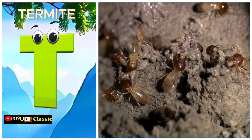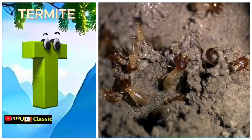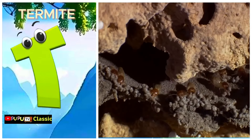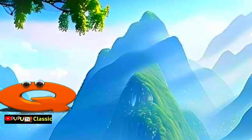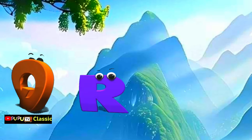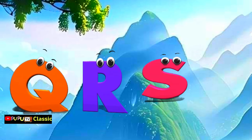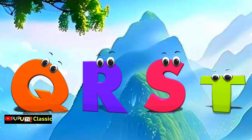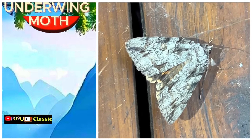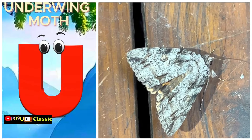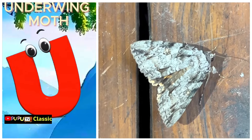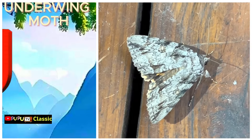T is for Termite. T. Termite. U is for Underwing Moth. U. Underwing Moth.